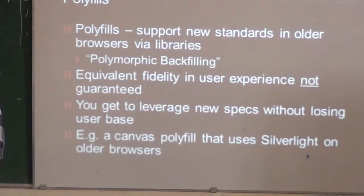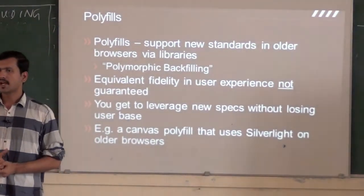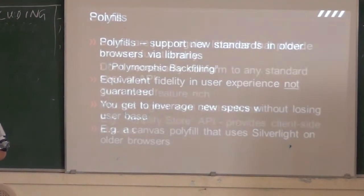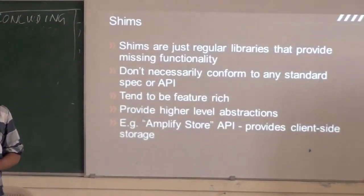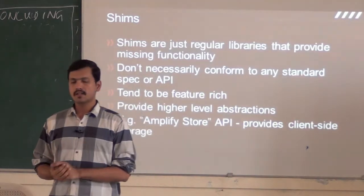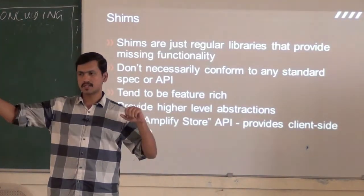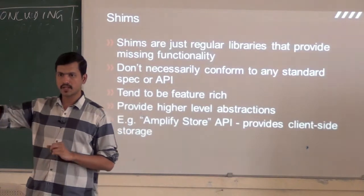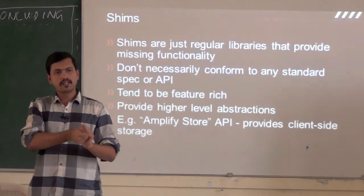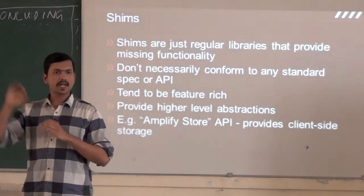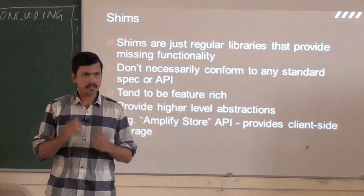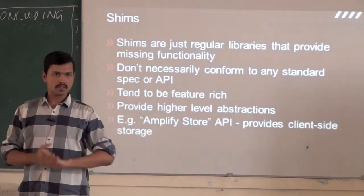The idea is you get to leverage new specs like Canvas in your app and still not lose your user base who are on older browsers. A polyfill typically will implement a W3C spec — so if there is a specification for web sockets, there might be a polyfill which implements that API completely in your library. You get to write code to that spec and not worry about whether the browser supports that particular feature or not.